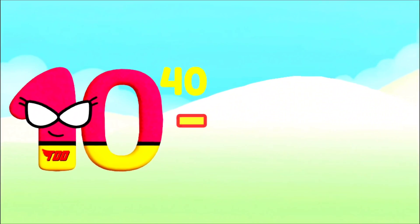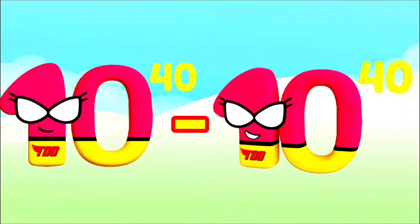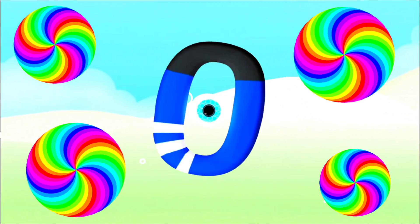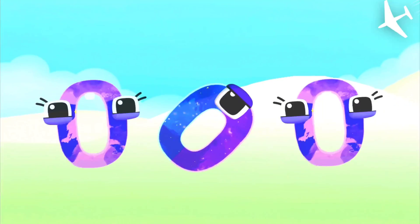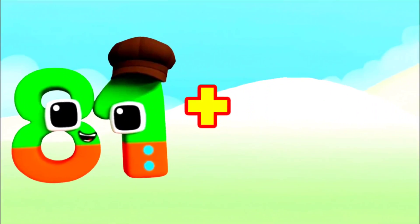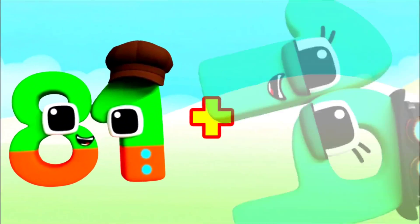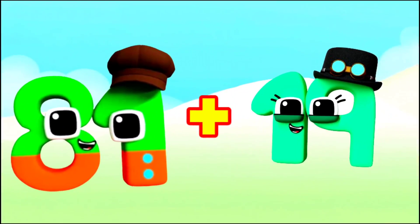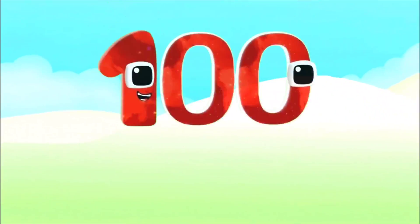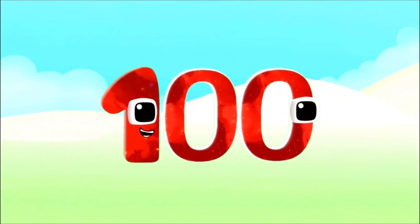10 duodecillion minus 10 duodecillion equals zero. 81 plus 19 equals 100 — I'm 100 with two zeros.